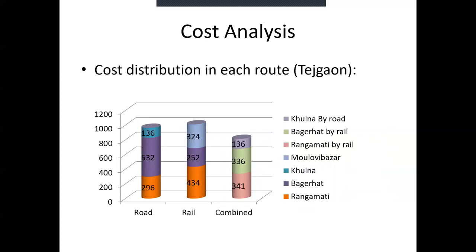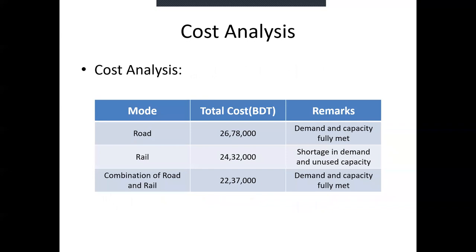This is just one example. Here we calculated the total cost for different modes. The rail route alone cannot satisfy the total demand and also has unused capacity, so it is crossed out. The combined and the road route both meet the demand and use the complete capacity. However, the total cost in the combined model is lower than the road route, so the optimum route will be the multimodal network.